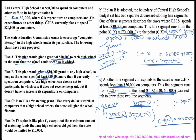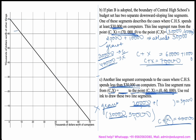Now let's draw these two line segments. On the x-axis we have thousands of dollars worth of computers (c), and on the y-axis we have thousands of dollars worth of other things (x). The first segment runs from (70,000, 0) to (30,000, 40,000). The second segment runs from (30,000, 30,000) to (0, 60,000). Joining these points gives us our two line segments for Plan B.